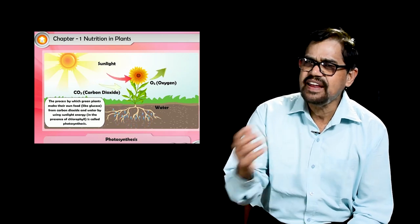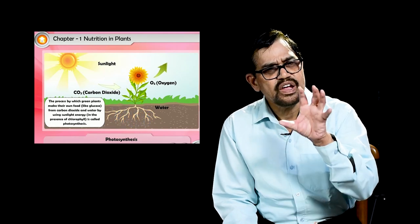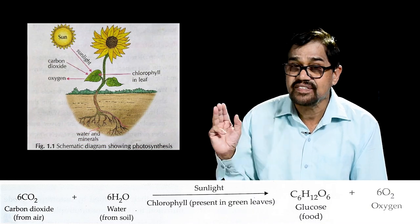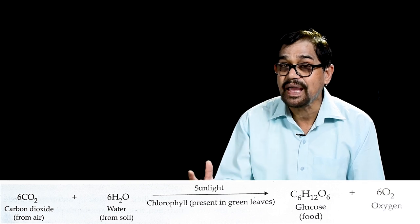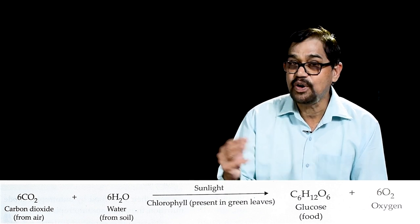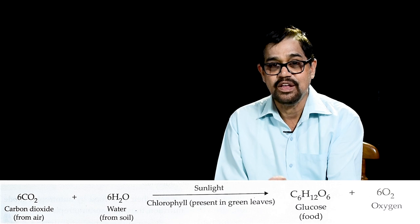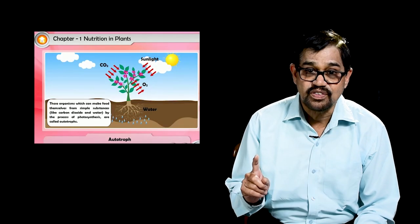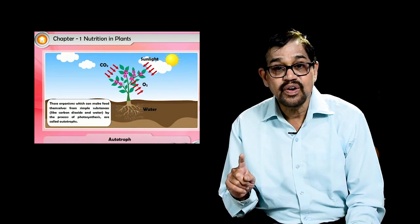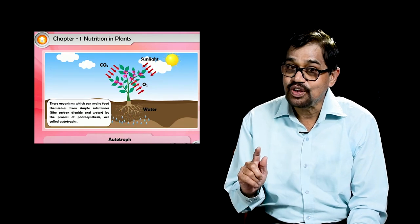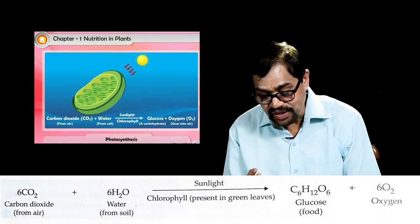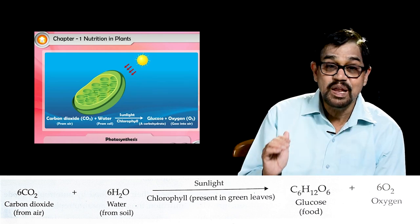Let's put it in equation form. Carbon dioxide is CO₂ and water is H₂O. In the presence of sunlight and chlorophyll, the product is glucose, which is C₆H₁₂O₆. Six molecules of carbon dioxide combine with six molecules of water in the presence of sunlight and chlorophyll to give one molecule of glucose, with the liberation of oxygen.